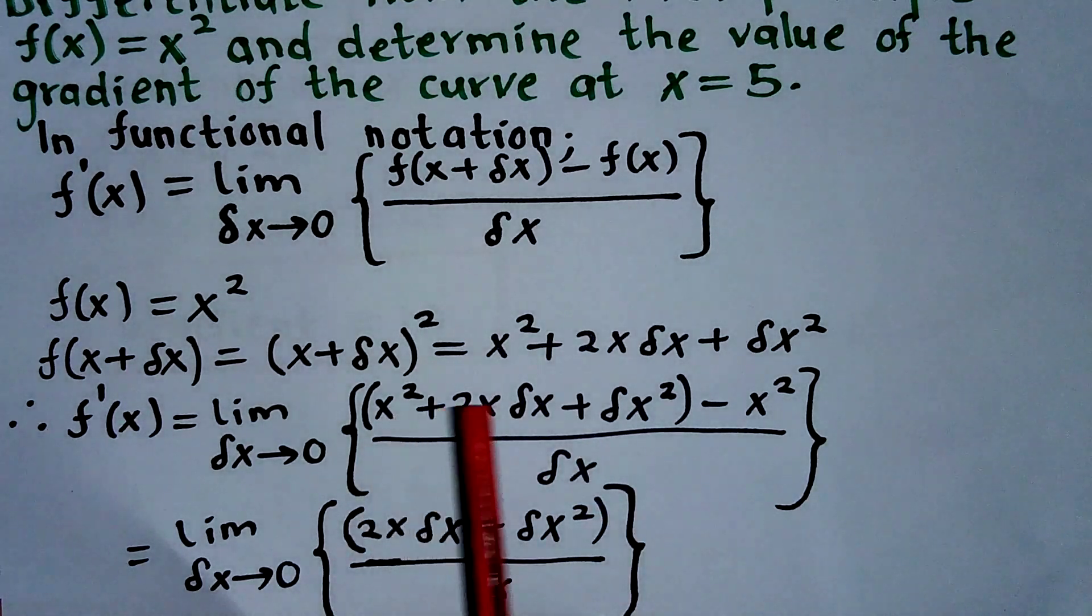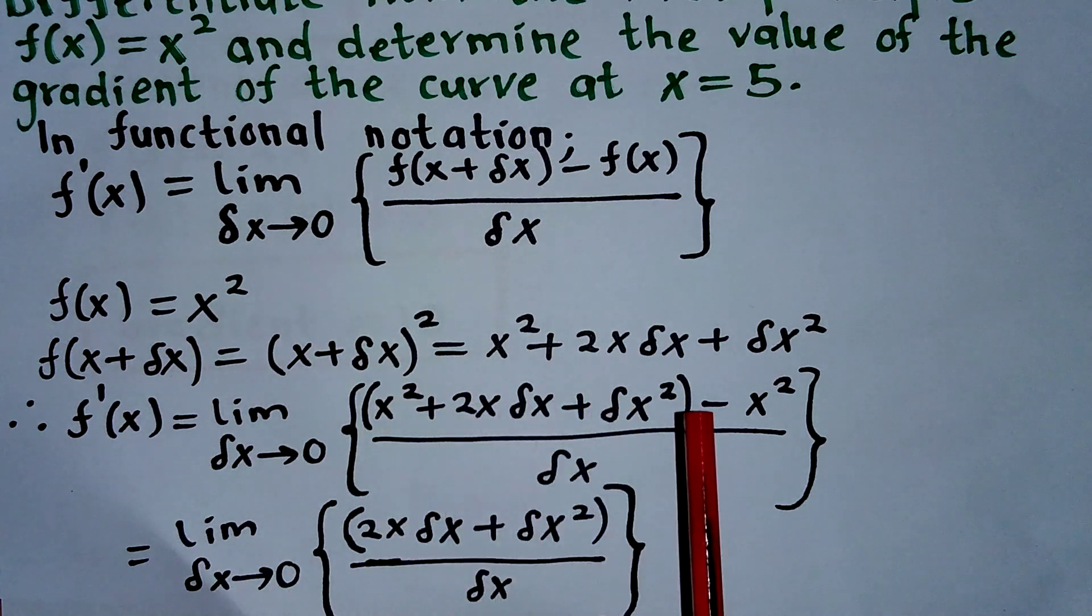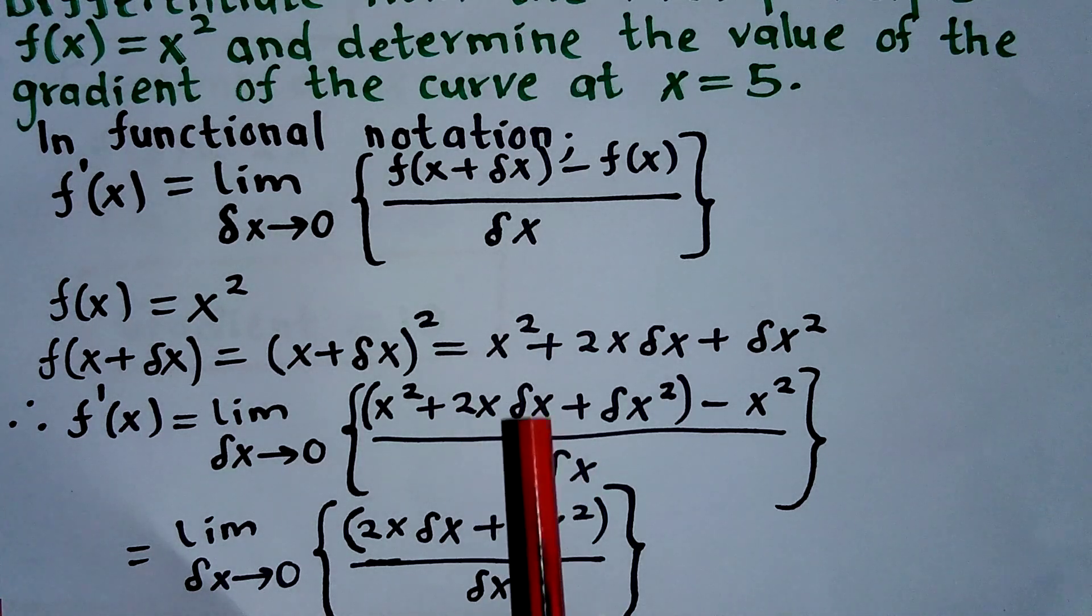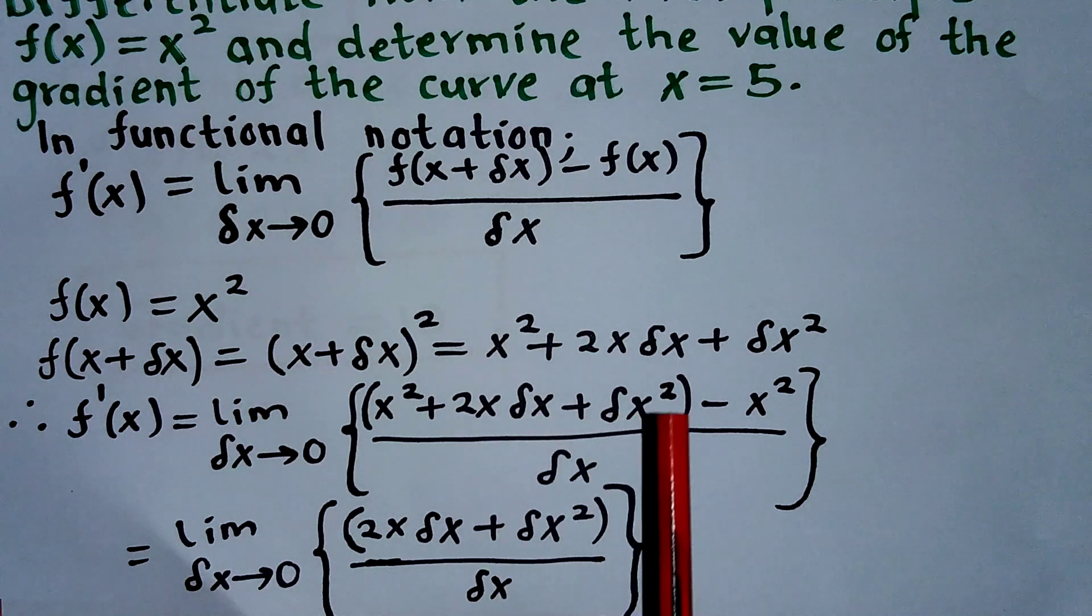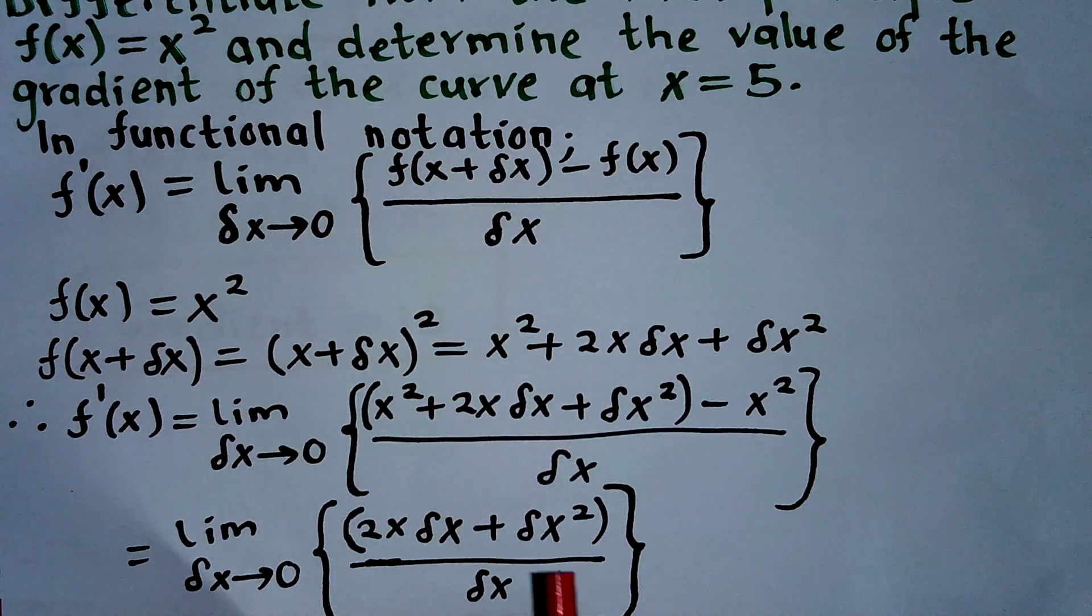So I can simplify this. This x² is going to cancel out with this x². So I'll be left with 2x·δx + δx² divided by δx.